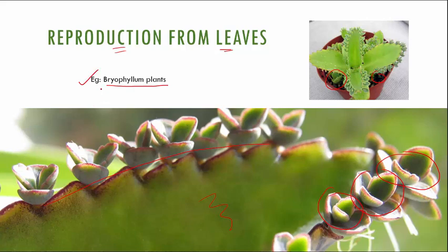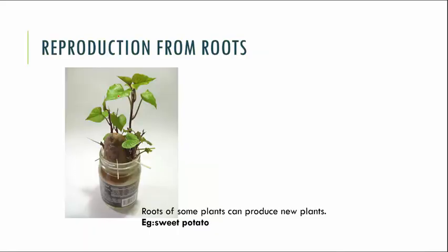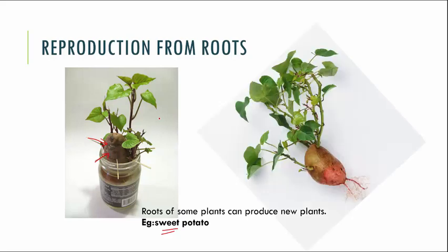The next method is reproduction from roots, and we will take the example of sweet potato. We support the sweet potato in a jam bottle with toothpicks, keeping the bottom of the potato dipped in water. After some days, roots start forming and the plant grows bigger. This is the method of reproduction with the help of roots — the sweet potato root develops further and gives rise to the entire plant.